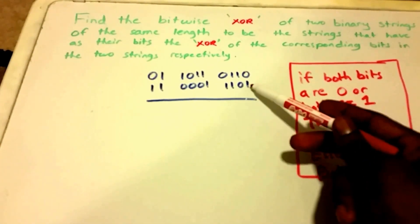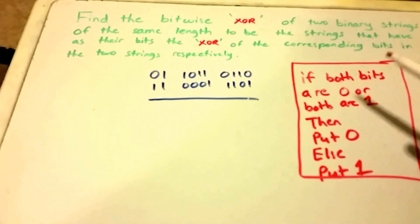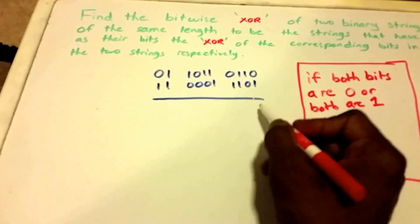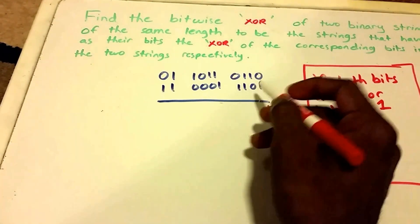So let's see, here we have a 0, we have a 1, so both bits are not either a 0 or a 1, so we put 1. Same thing here, so you put 1.